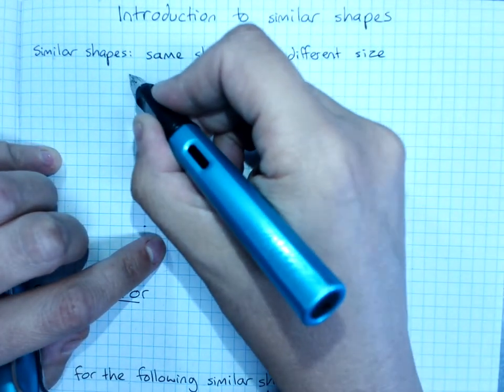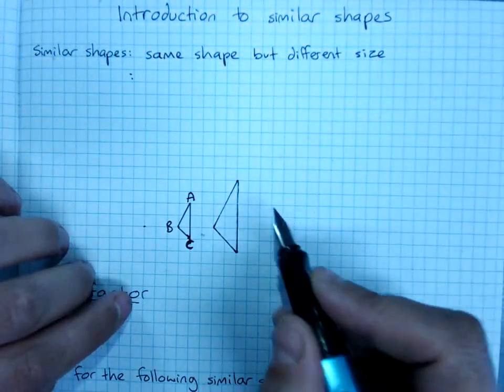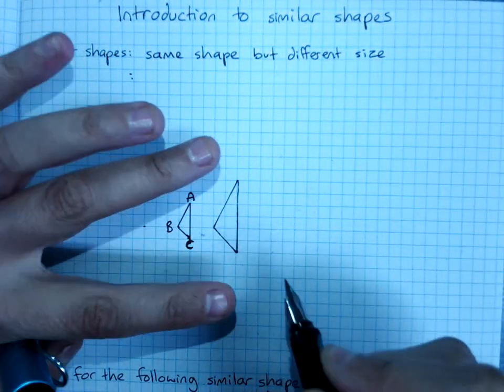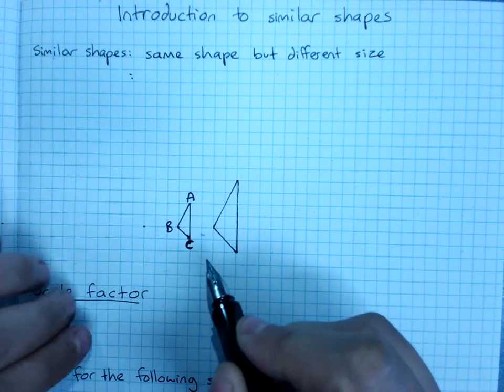And you get similar shapes because they are an enlargement going this way or a reduction going that way of each other.